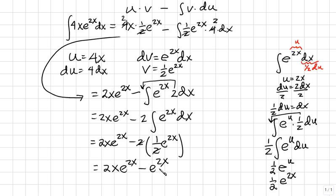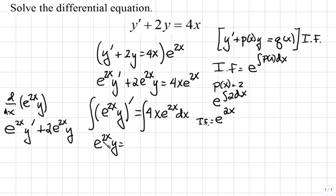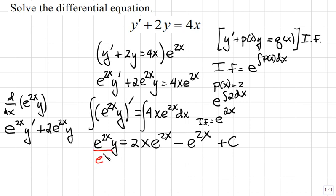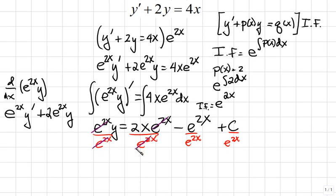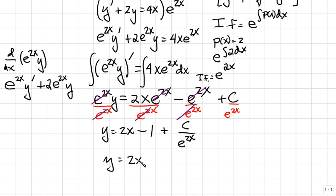We'll copy this result into our previous stage of the problem. So we're left with e to the 2x times y equals 2x e to the 2x minus e to the 2x plus some constant. Next, to solve for y, we'll divide through by e to the 2x. In each case the e to the 2x cancels, leaving y equals 2x minus 1 plus c over e to the 2x. Using laws of negative exponents, we write this as y equals 2x minus 1 plus c times e to the negative 2x. So this is the general solution of our differential equation.